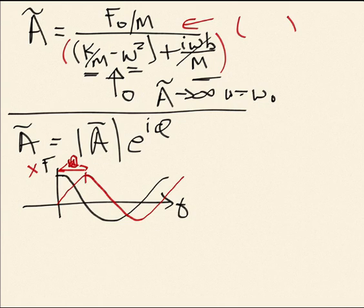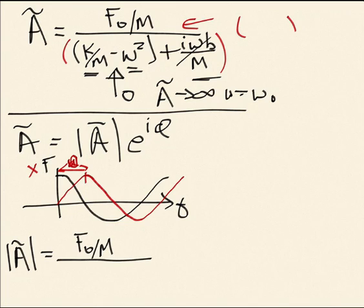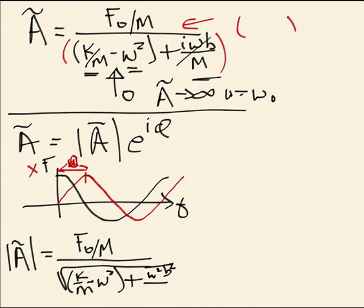The answer is that the magnitude of A is equal to F naught over M times the square root of k over m minus omega squared, minus omega squared, plus omega squared b squared over m squared. All right, and we'll discuss the shape of this curve versus frequency in class.